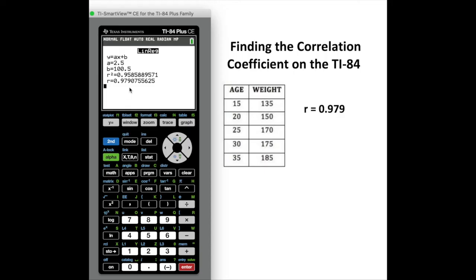As you can see now, the value of R, which is 0.97907, is our correlation coefficient and it is now showing. Pretty straightforward - you just have to make sure that you turn Diagnostics On in order to get that correlation coefficient to show up.